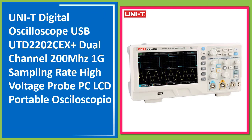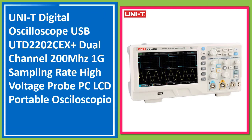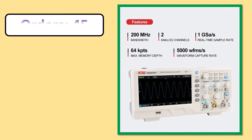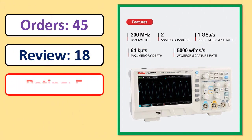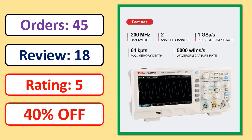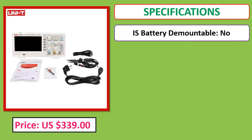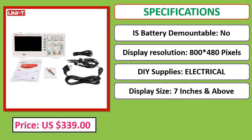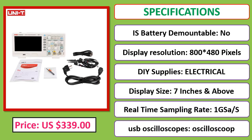Number 1: UNI-T UTD 2202CEX Plus USB dual channel 200 MHz, 1GS/s sampling rate, high voltage probe, PC LCD portable oscilloscope. Orders, review rating, and percent off are shown. Price and specifications listed. Check the description below for the product link.